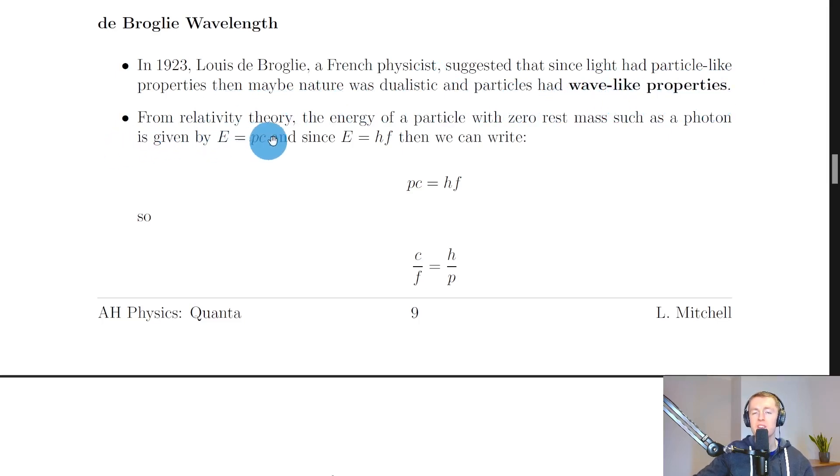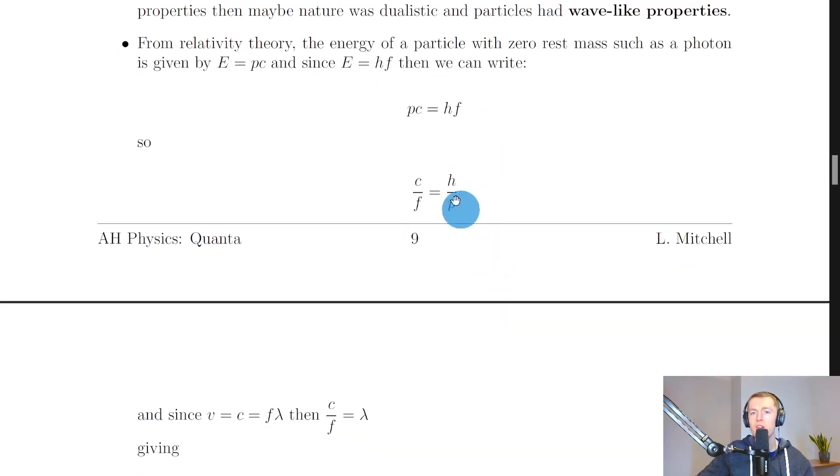From relativity theory, we can say that the energy of a particle with zero rest mass, such as a photon, is given by E equals PC, where P is momentum and C is the speed of light. And since E equals HF for photons, then we can write PC is equal to HF. So if we rearrange this to get C over F, then we get C divided by F is equal to H over P.